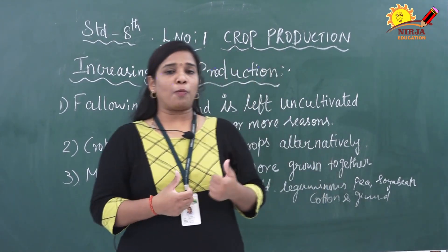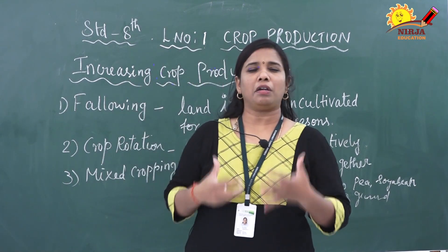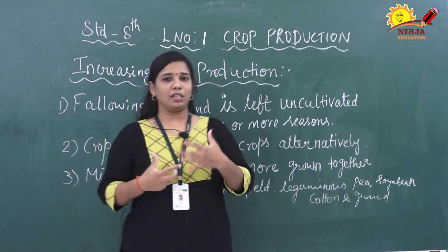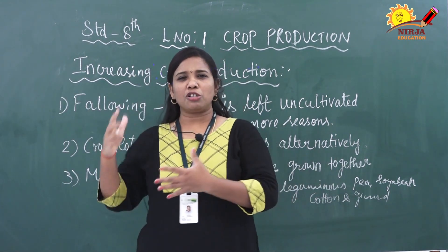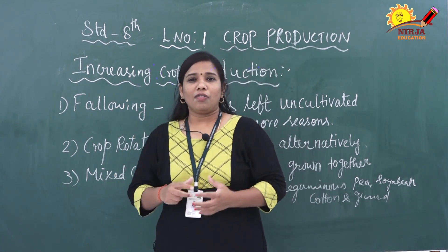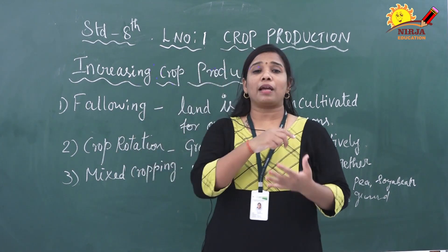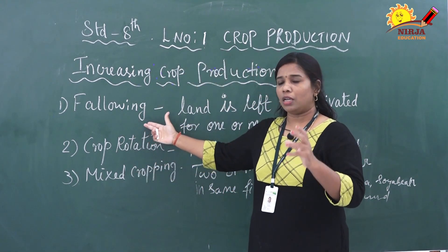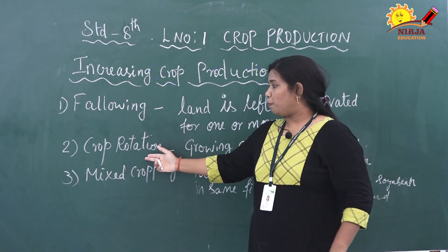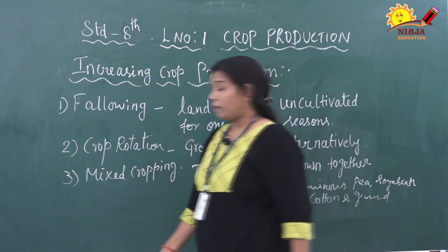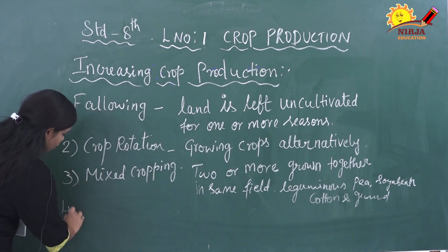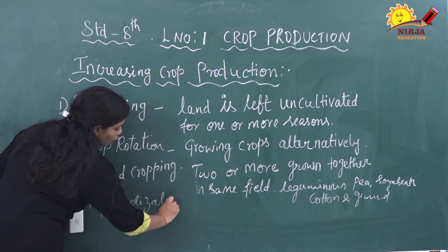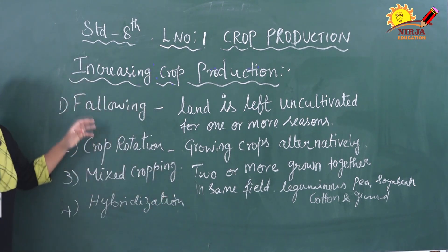We may think that increasing crop production means we have to use different kinds of agricultural implements and new technologies. But in addition to systematic agriculture practices, we can do several other practices. The first one is fallowing. Second is crop rotation. The third one is mixed cropping. The fourth one is hybridization.